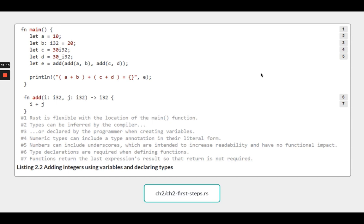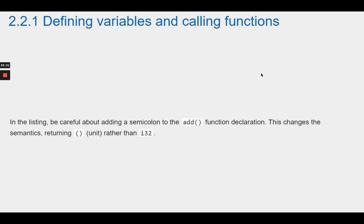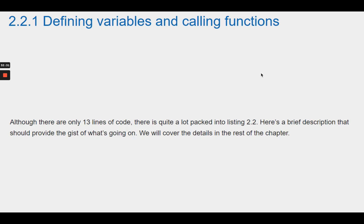Note: in the listing, be careful about adding a semicolon to the add function declaration. This changes the semantics, returning unit rather than i32. Although there are only 13 lines of code, there is quite a lot packed into listing 2.2. Here is a brief description that should provide the gist of what's going on. We will cover the details in the rest of the chapter.